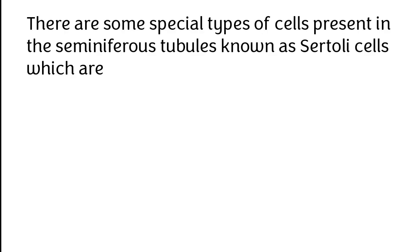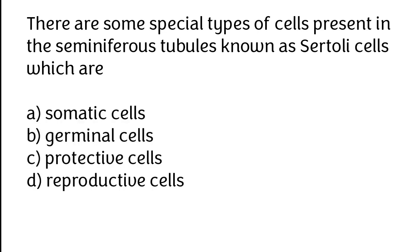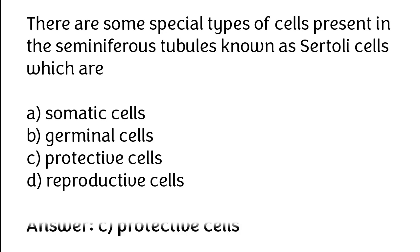There are some special types of cells present in the seminiferous tubules known as Sertoli cells, which are: A) Somatic cells, B) Germinal cells, C) Protective cells, D) Reproductive cells. The correct answer is option C — protective cells.